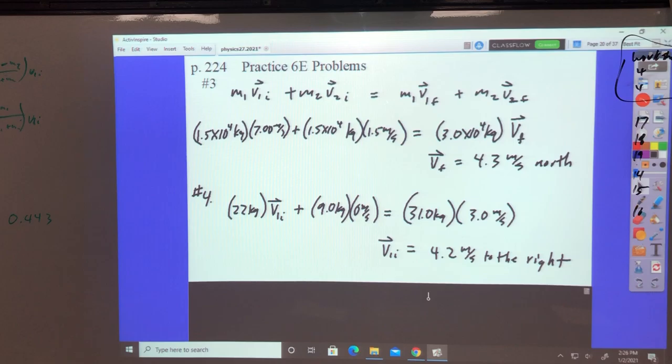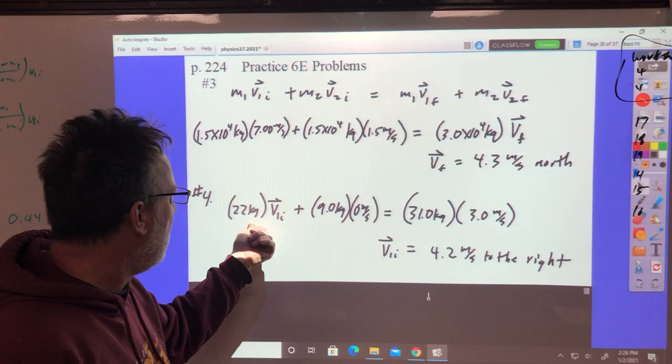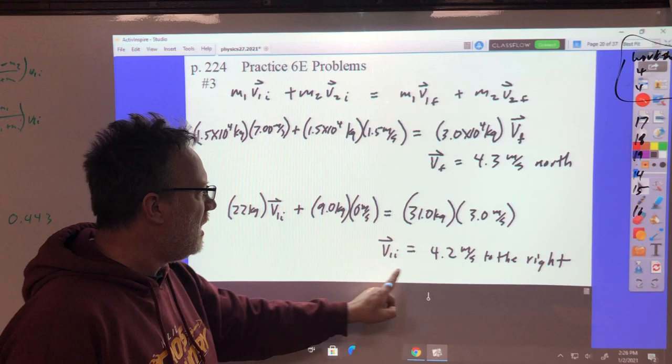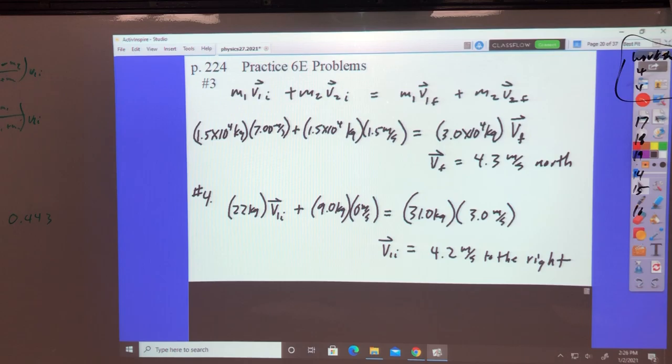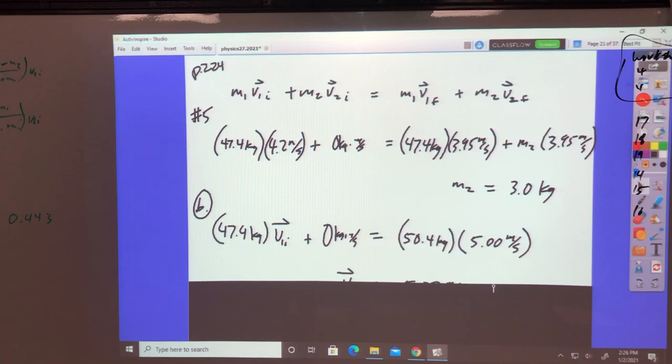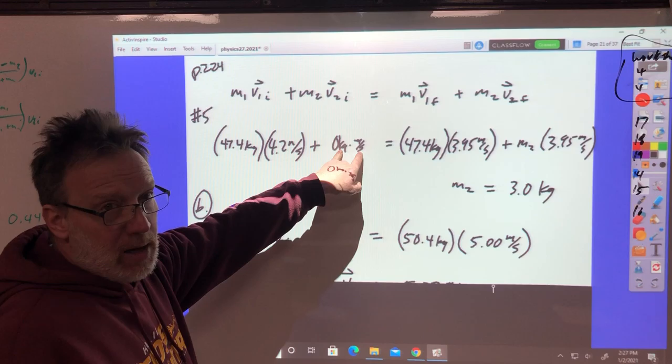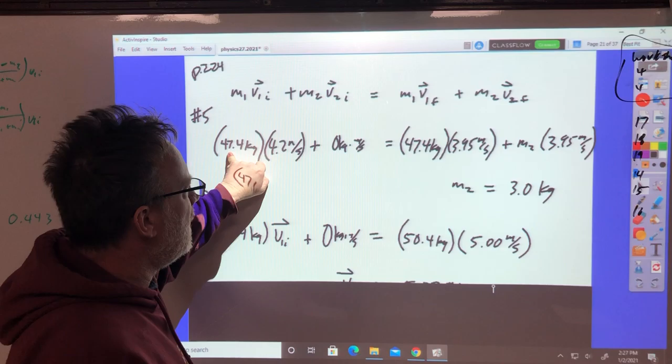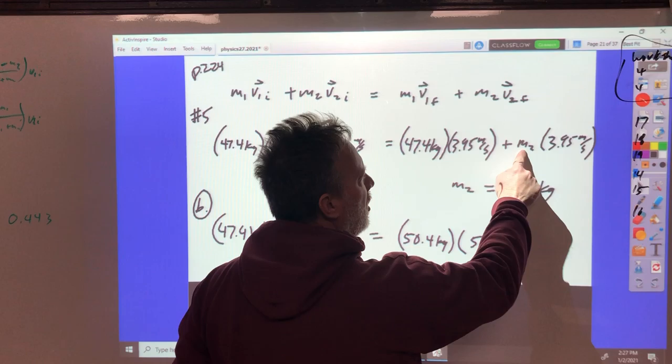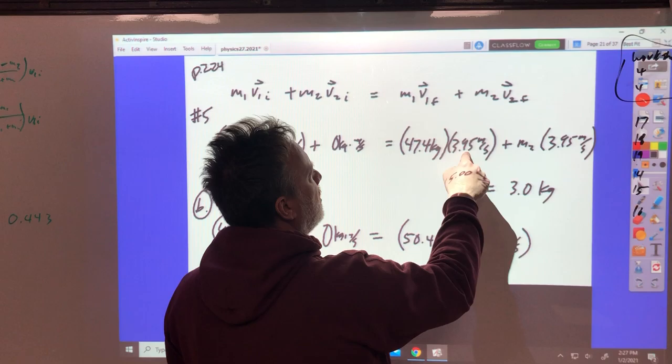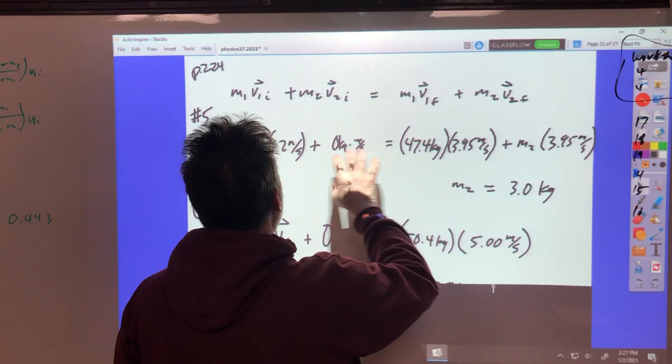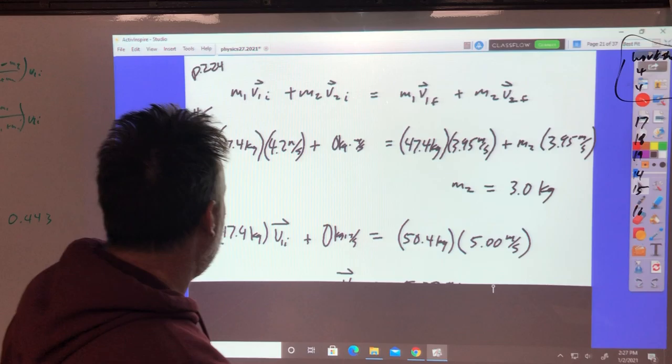The dry cleaner throws 22-kilogram bag of laundry into a 9-kilogram cart that's sitting there. When they're done, it's moving at 3 meters per second to the right and the total mass is 31. So how fast was the laundry going? Well, that's zero. There we go. So it's 93 divided by 22 comes out to be 4.2 meters per second.